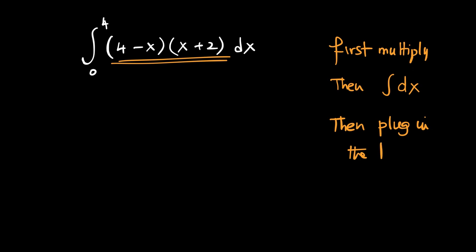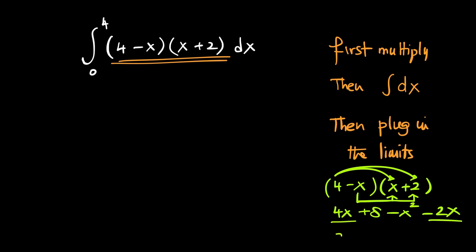So there is an additional step over here. Let's multiply it out. 4 minus x multiplying with x plus 2. 4 into x is 4x. 4 into 2 is 8. Minus x into x is negative x square and negative x into 2 is negative 2x. So 4x minus 2x is 2x minus x square plus 8. These are the terms that we obtain.